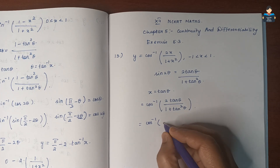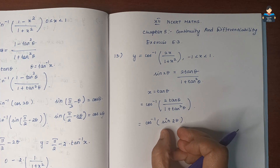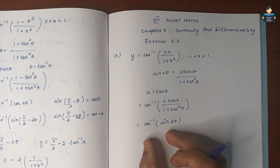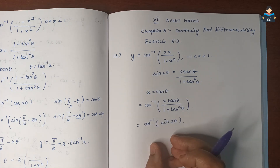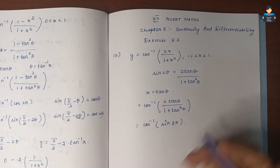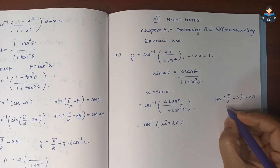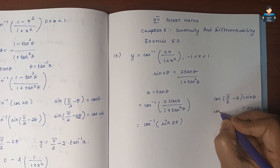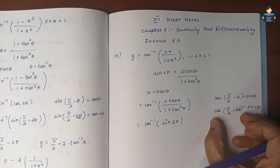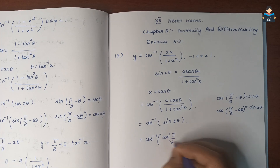So we have cos inverse of sin 2θ. We need to convert sin 2θ in terms of cos. Using the identity cos(90° - θ) = sin θ, we write sin 2θ as cos(π/2 - 2θ). So we get cos inverse of cos(π/2 - 2θ).